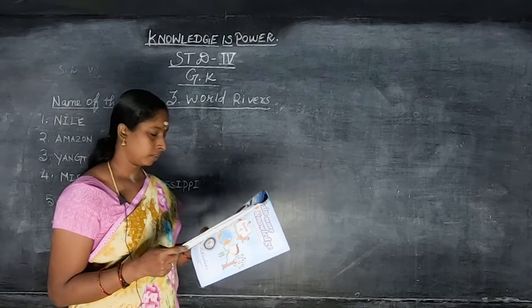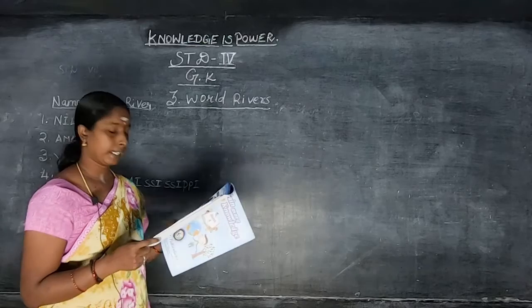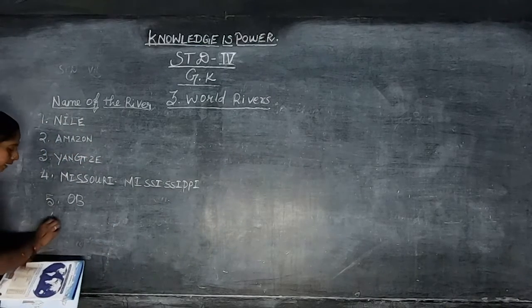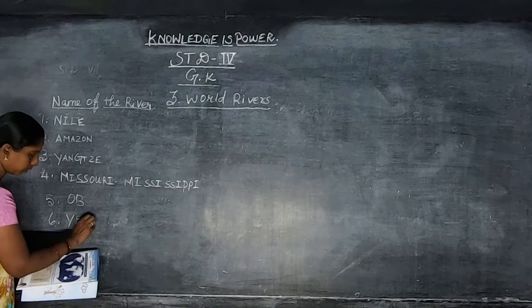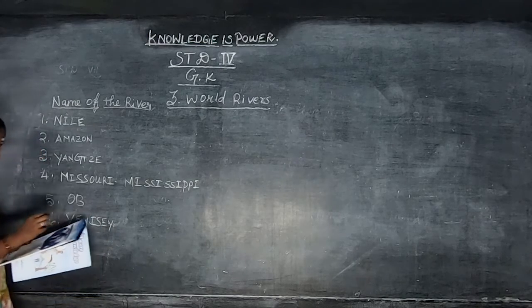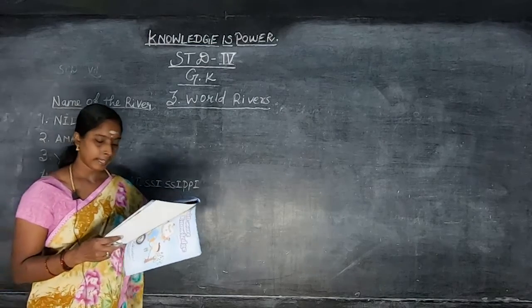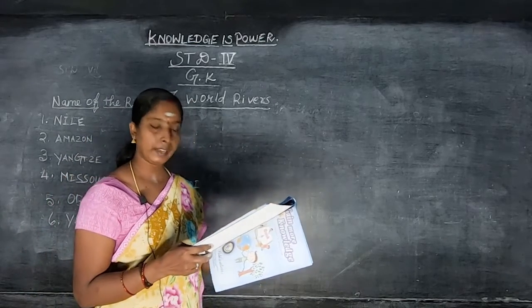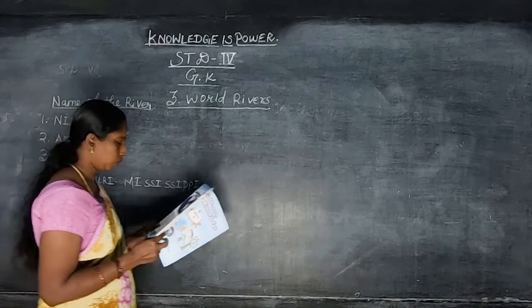Sixth one: Yenisei — Y-E-N-I-S-E-I. Continent: Russia. Length: 5,550 kilometers.